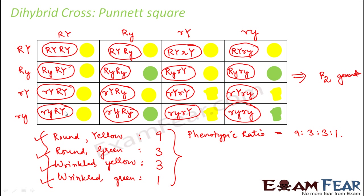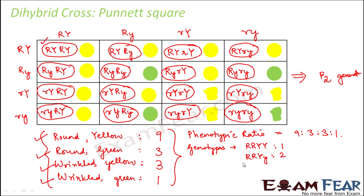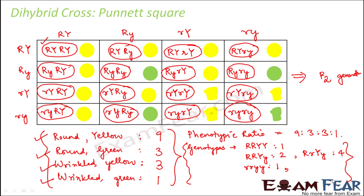If you see, you have almost some 10 unique genotypes. For example, capital R capital R capital Y capital Y — how many of it exists? One. Similarly, capital R capital R capital Y small y — how many exist? Two. Again, small r small r small y small y — how many exist? One. And for capital R small r capital Y small y, it exists as four. So like that, you can find out how many exist for each of the unique genotypes, and you will see that you come up with a ratio somewhat like 1:2:1:2:4:2:2:1:1. So that is how you can find out the genotypic ratio — maybe you can do that yourself just to check if you are able to find the unique genotypes.